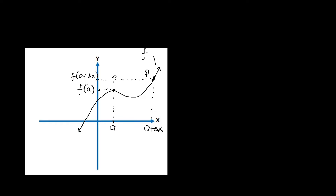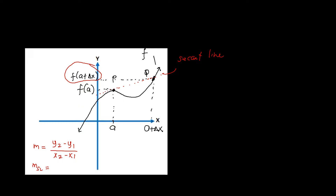What is a secant line? A secant line is a line passing through the graph that connects two points on the graph. So for points P and Q, we draw a line connecting them — this gives us our secant line. Based on the secant line, we can find its slope. The slope of a general line is y₂ minus y₁ over x₂ minus x₁. So our slope of the secant line will use y₂ equivalently.